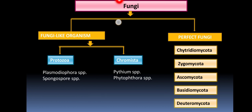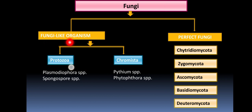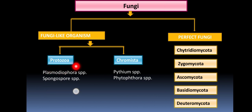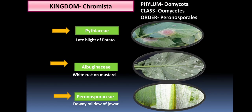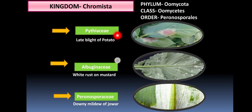In my previous video we discussed that fungi are classified into two major groups: fungi-like organisms and the true fungi. Fungi-like organisms are further classified into two kingdoms based on the presence or absence of a cell wall. Kingdom Protozoa lacks a cell wall and has a plasmodial thallus, whereas Kingdom Chromista has a cell wall made primarily of cellulose. We discussed the order Peronosporales, which is divided into three important families, and covered the Pythiaceae family specifically.